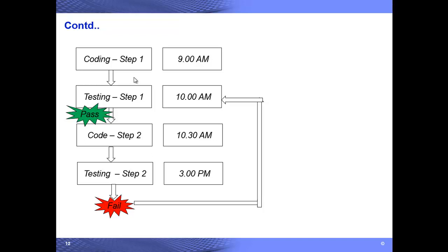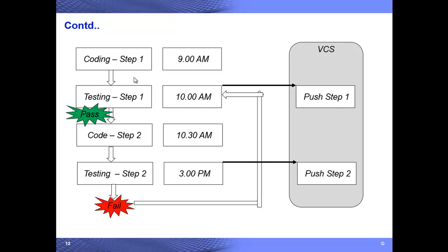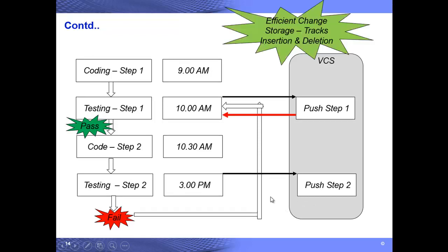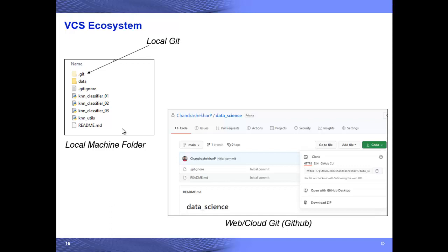So what's the solution? Use a VCS — version control system. Whenever coding step 1 is done and testing passes, just push that step 1 code into the VCS. Then go to step 2. If testing fails, you can push it or avoid it — it's up to you. Once you find that step 2 code failed and you want to restore step 1, just do a pull. This pull request from the VCS will bring the step 1 version of the code back to your local machine.